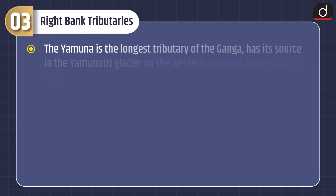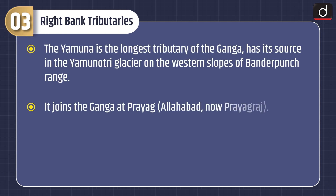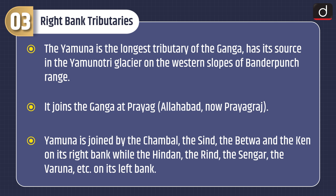The Yamuna is the longest tributary of the Ganga and has its source in the Yamunotri glacier on the western slopes of the Bandir Panch range. It joins the Ganga at Prayag, Allahabad, now Prayagraj. Yamuna is joined by the Chambal, the Sindh, the Betwa, and the Cane on its right bank, while the Hindon, the Rind, the Singar, and the Varuna join on its left bank.